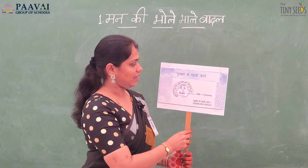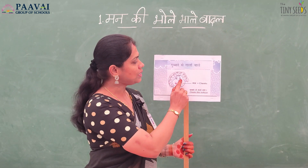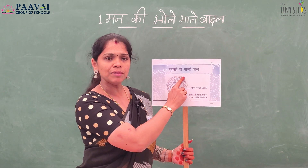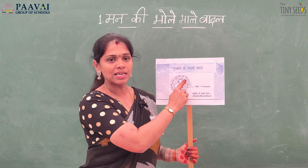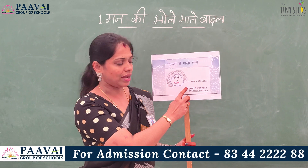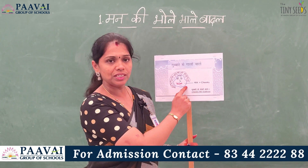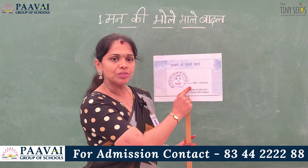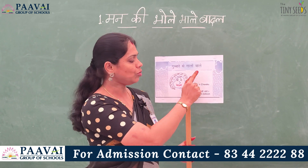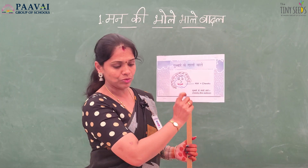Gubbar jhabbar balo means cheeks. Gubbar jhabbar is nothing but balloons. The balloons will be very chubby. So the poet is just comparing the cheeks of the children to the balloons. Galo means cheeks. Gubbar jhabbar balo means balloons.